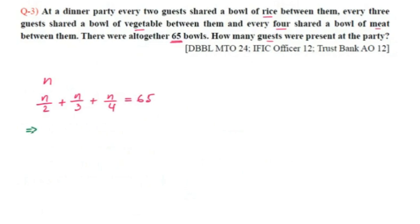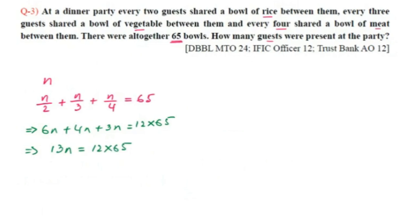Multiplying through by 12: 6N + 4N + 3N = 12 × 65, so 13N = 12 × 65. Dividing both sides by 13, we get N = 12 × 5 = 60.